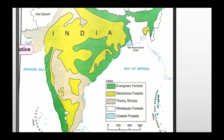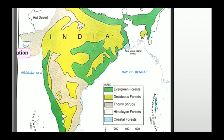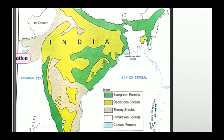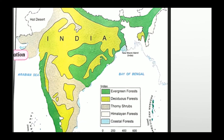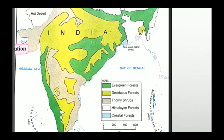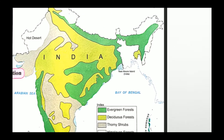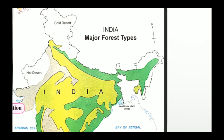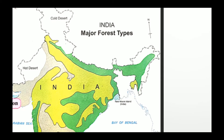The one which we see in a yellow color is the deciduous forest. You can see the maximum area of the country is occupied by deciduous forest. Thorny shrubs, which is shown in the light brown color, occupying the area of Gujarat, Rajasthan, some part of Madhya Pradesh, the rain shadow regions of Maharashtra, Andhra Pradesh, Telangana.